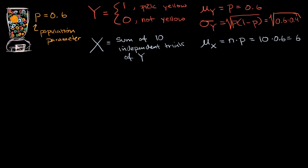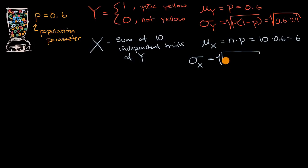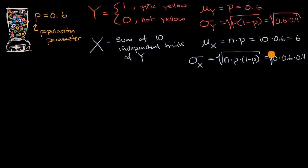Now what's the standard deviation? The standard deviation is equal to the square root of n times p times (1 − p). You just put an n under the radical sign. So in this particular situation that gives us the square root of 10 times 0.6 times 0.4.